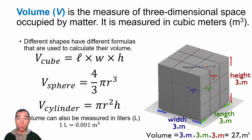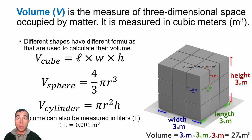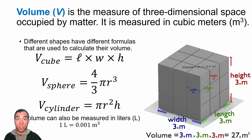Volume is another useful property to describe a system of matter. Volume is the amount of space a system takes up in three dimensions. It's measured in cubic meters, and different shapes have different formulas. For example, the volume of a cube is length times width times height, where each dimension is in meters, giving you meters cubed. You'll also need to know volumes of shapes like spheres or cylinders, and other units like liters or cubic centimeters.